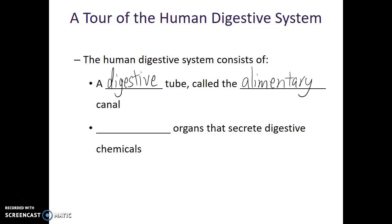The alimentary canal is the path that food takes as it's processed through our digestive system. Every step along that path — our mouth, throat, esophagus, stomach, and small and large intestines — is part of the alimentary canal. But that's not all; we also have accessory organs. These are glands and structures which secrete materials into the alimentary canal but are not directly a part of that tube. This includes our salivary glands, pancreas, liver, and gallbladder, which secrete materials that aid in digestion.